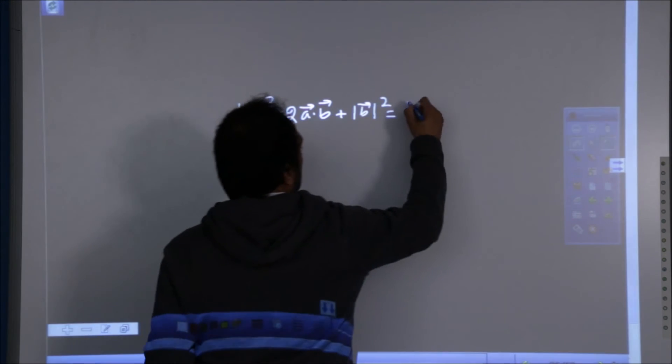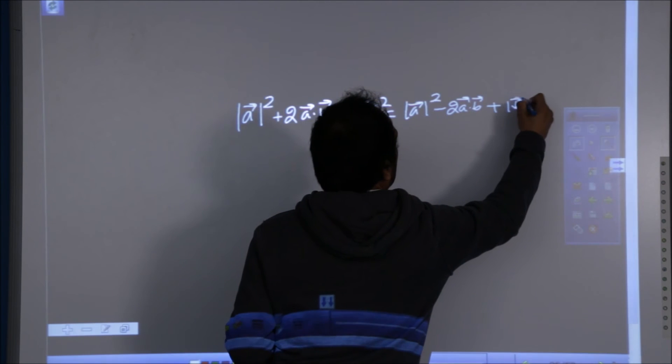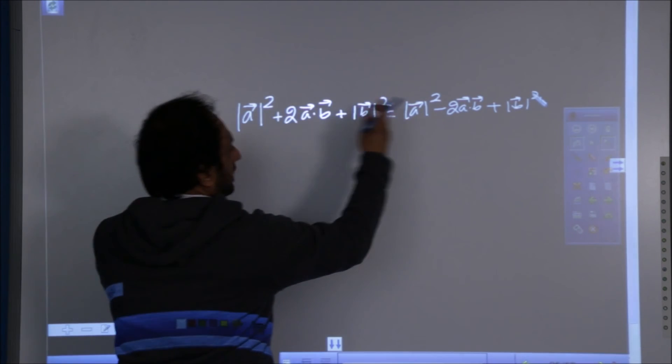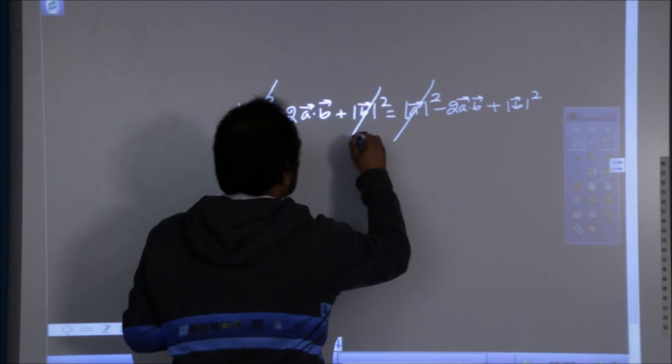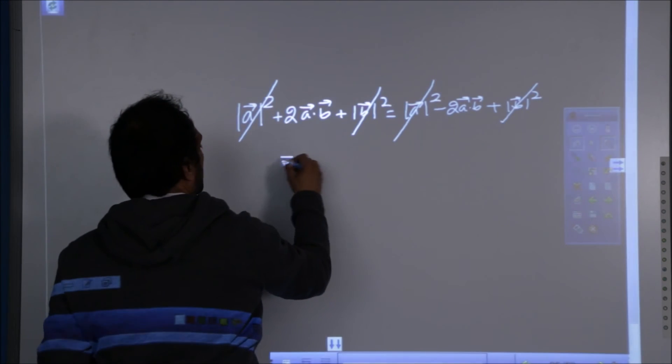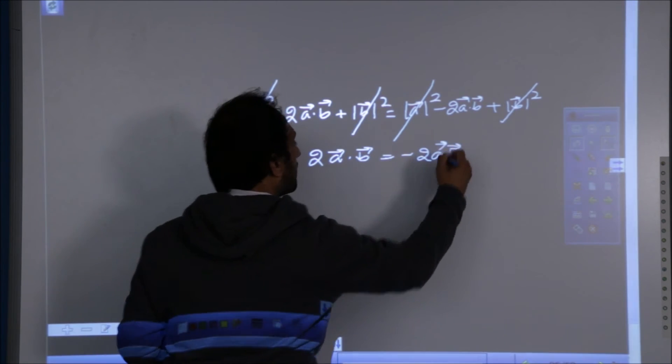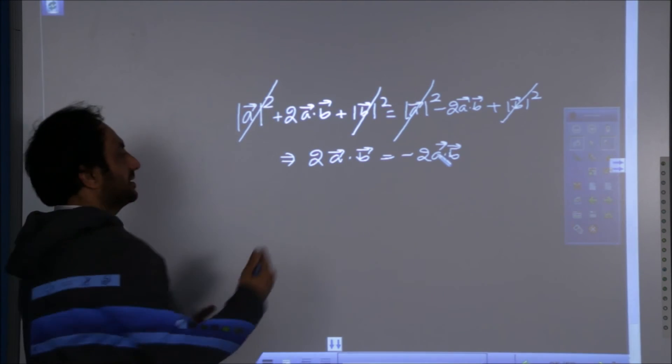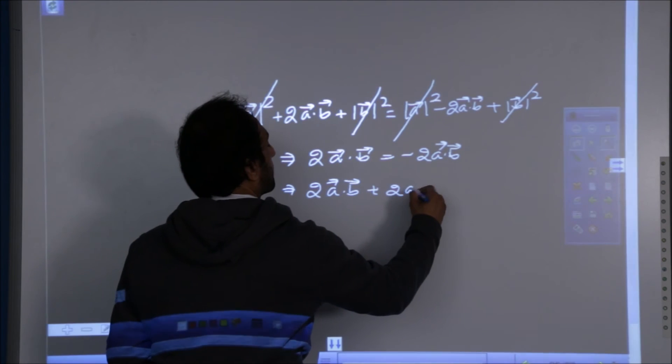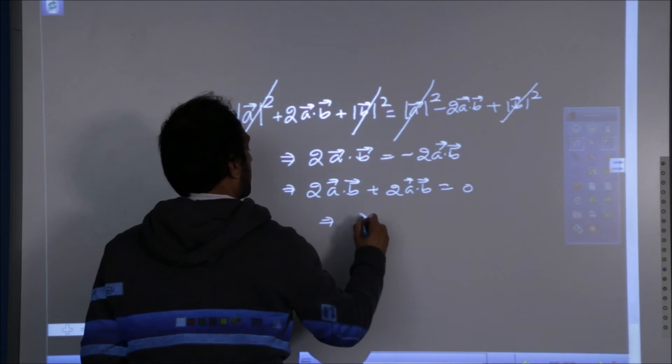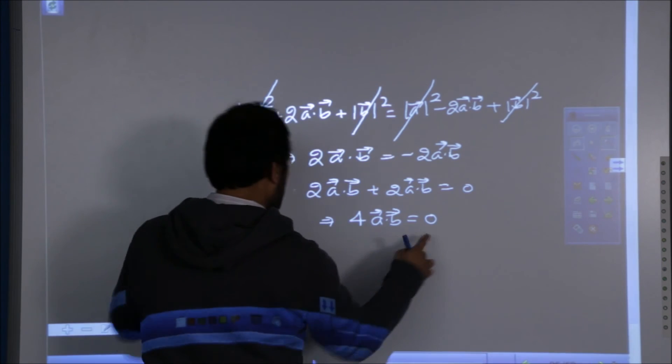Now, what happens? A dot a becomes mod a square. A dot b and b dot a is twice of a dot b. B dot b is mod b square. On the other side, mod a square is same as mod a square on the other side. So, the two will get cut in the next step. In exam, you will write one more step. The two cannot be cancelled. Rather, they can be accumulated on one side. And what if I take 4 below zero? It will be zero.